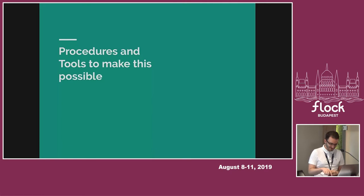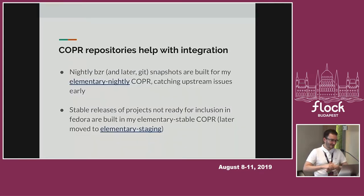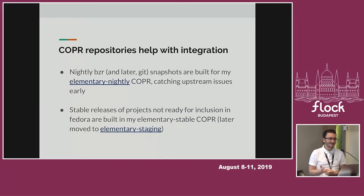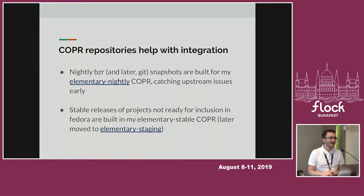How did I do this? It's not so easy to package 80 packages from upstream and not have things break for one person. I started building snapshot builds of upstream code in Copr to catch issues early and tell upstream when something broke. Then I started building stable releases of projects not ready for inclusion in Fedora in another Copr — first elementary stable, then I moved that to elementary staging. There are only about five packages left in there, so everything else is in proper Fedora repositories.